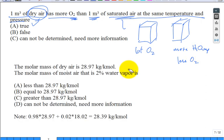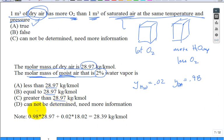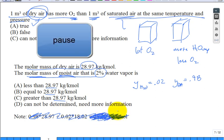The molar mass of dry air is 28.97. Now molar mass of moist air that is 2% water vapor - what do I mean by 2%? Y of H2O is 0.02, the Y of dry air is 0.98 of my mixture. What is the molar mass now of that moist air? Is it less than 28.97, equal to 28.97, greater than, or I need more information?